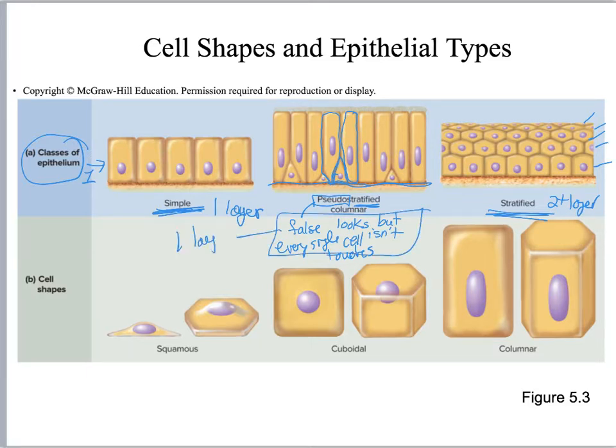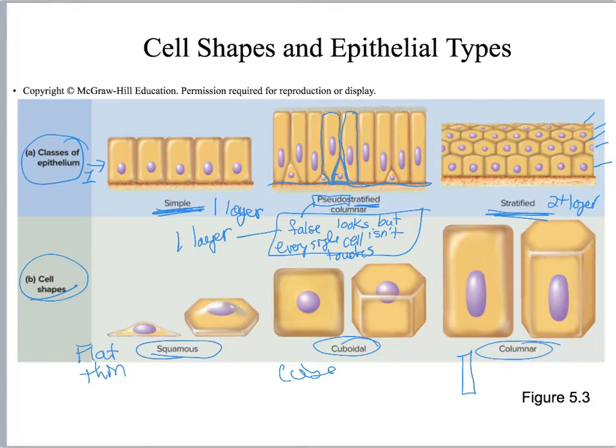Now we've got shape. Squamous is flat and thin. Cuboidal, you've got a cube. Then columnar is your rectangle or column. Notice what's happening with the nucleus: the nucleus in squamous stays in the center, and this cell is so thin that where the nucleus is it kind of does a little bubbly thing. In cuboidal the nucleus is round and it stays in the center. Columnar, the nucleus is more oval in shape and it tends to float towards the basement, not always, that's a general tendency.